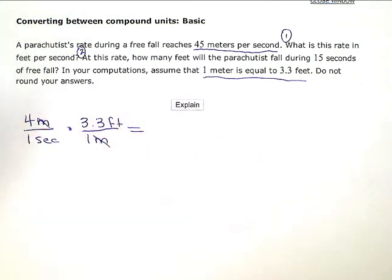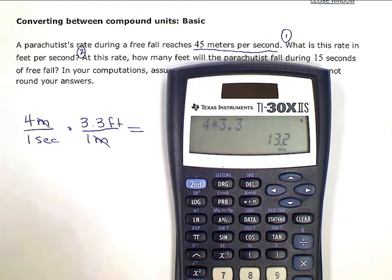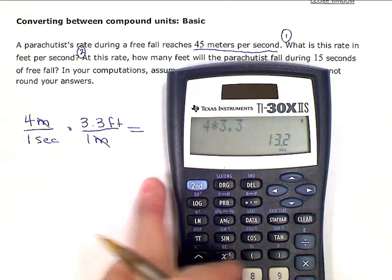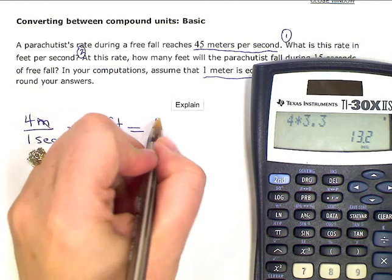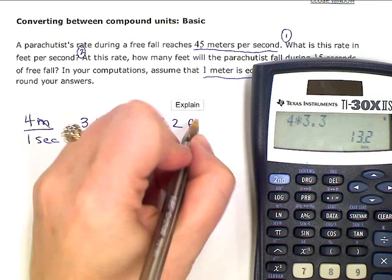So I set it up so that my units will cancel. And then I just go ahead and do the calculations. So I have 4 times 3.3 in the numerator. So 4 times 3.3 gives me 13.2. And the only unit I'm left with in the numerator is feet.